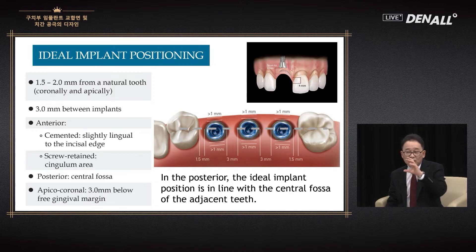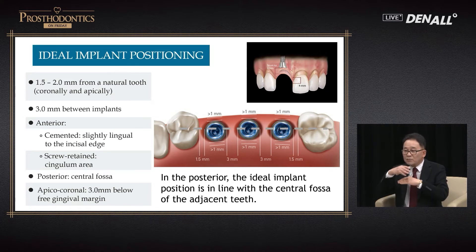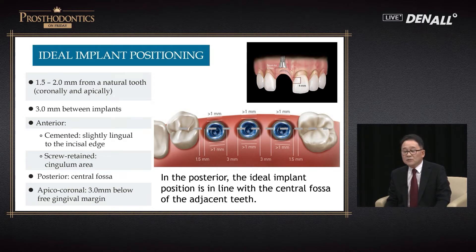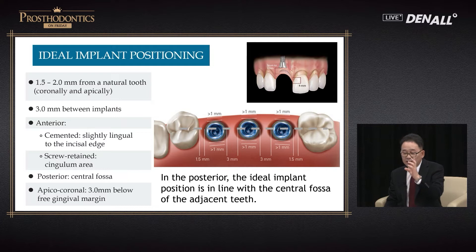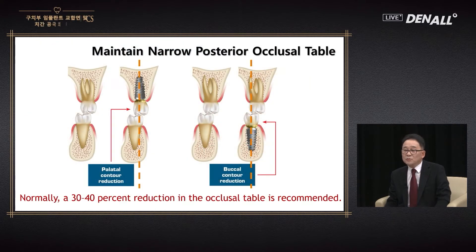But it's not that easy to do. Surgery cannot be done ideally — if the oral environment were very good, the teeth would not have gone missing. Bone is resorbed and the teeth positions are not ideal, so implants cannot be placed in an ideal position. Ideally, in the posterior region, the ideal implant position is in line with the central fossa of the adjacent teeth. That is the best position, and implant position can explain almost all outcomes.